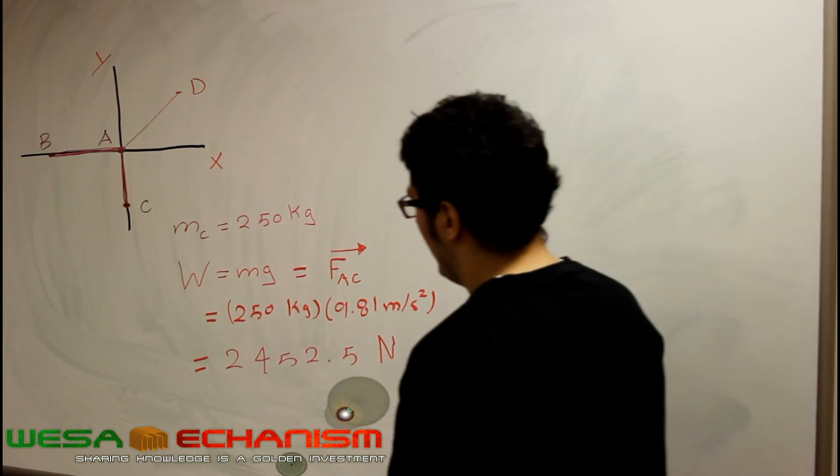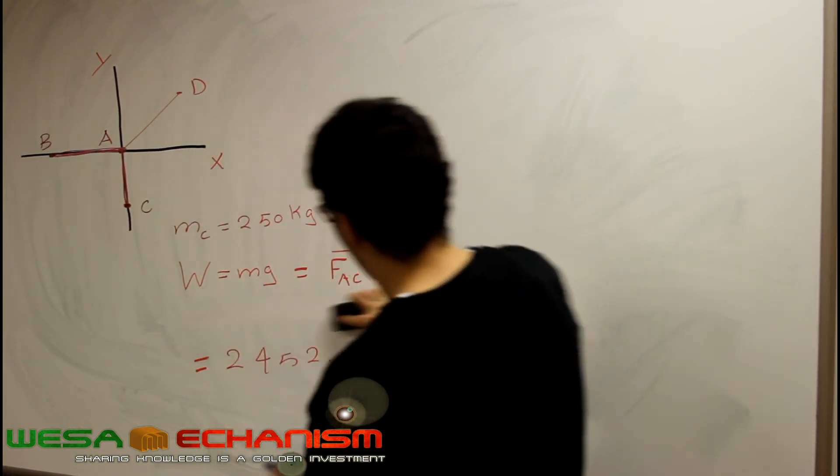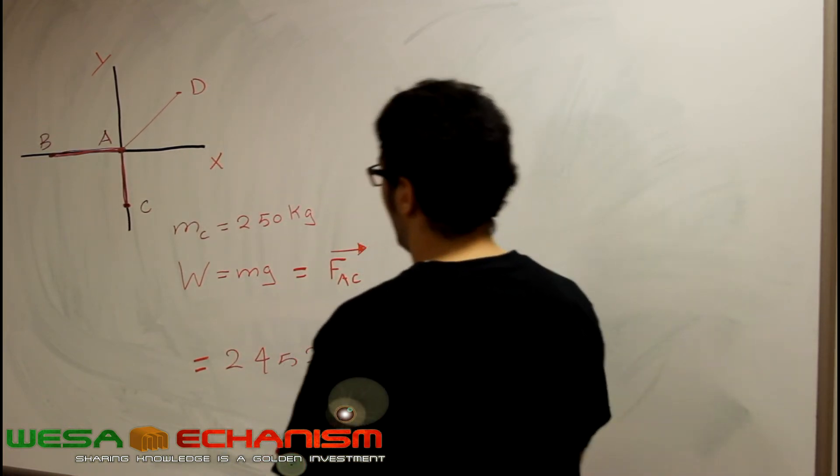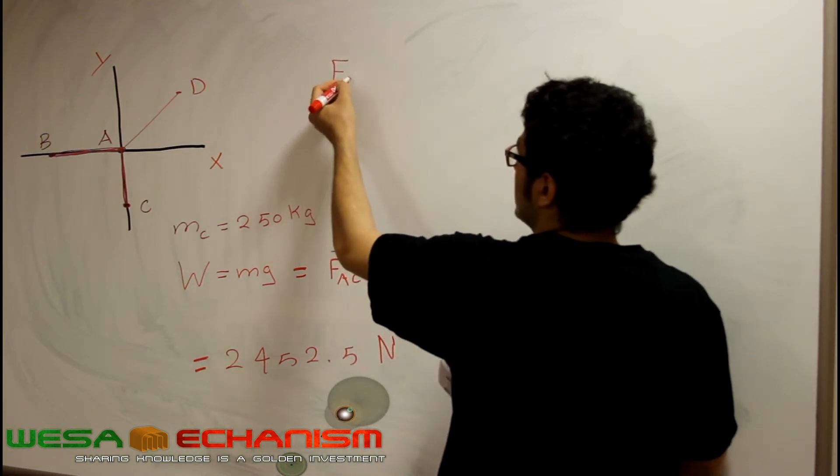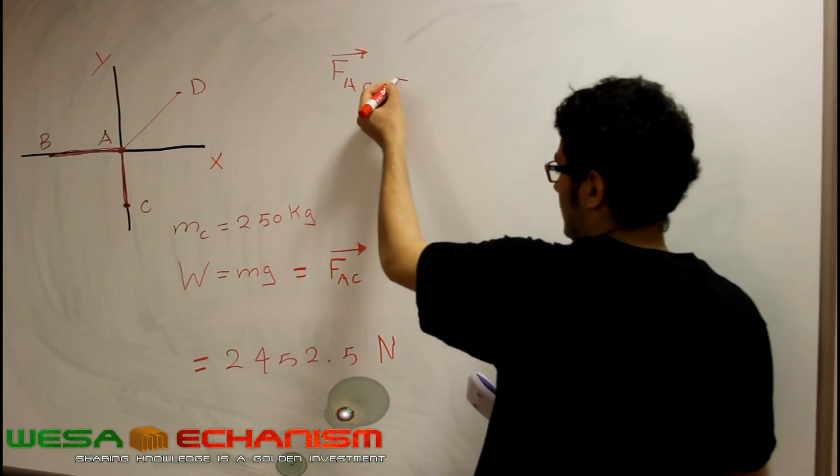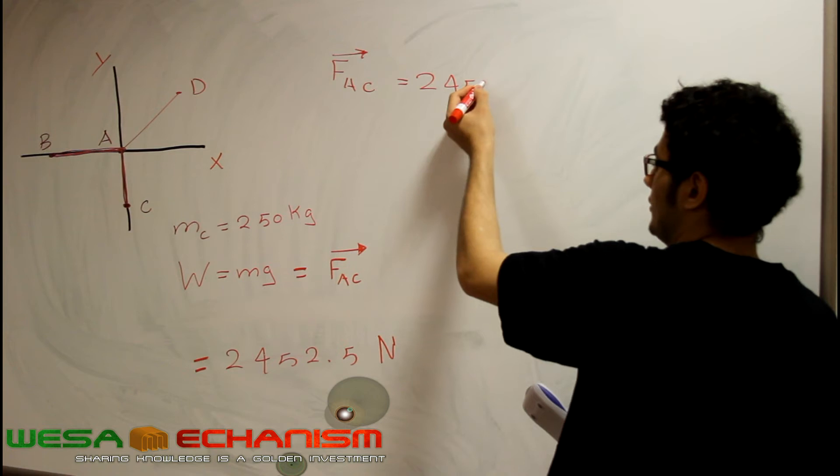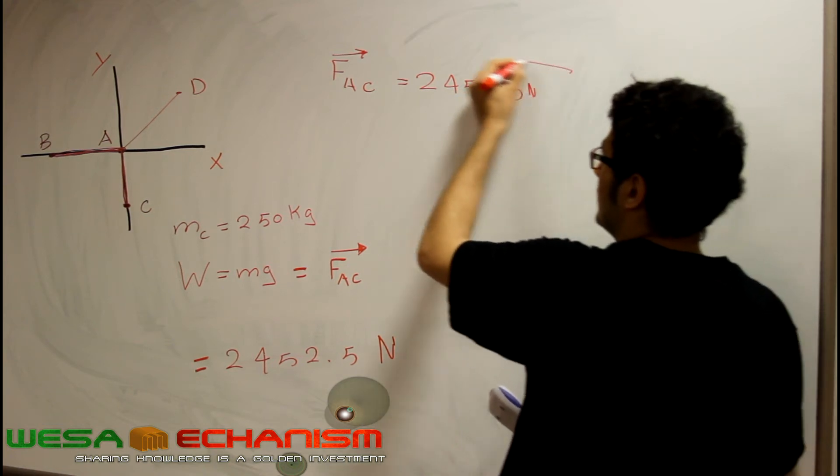It seems that we can have a value of 2,452.5 Newtons. So this is our FAC. We are going to write this in here so we can have more space to work on, which is equal to 2,452.5 Newtons.